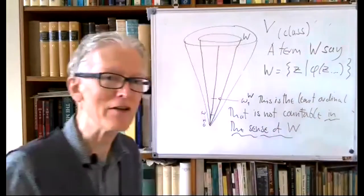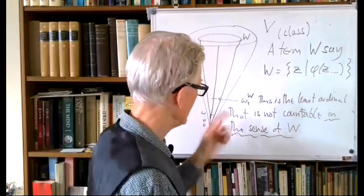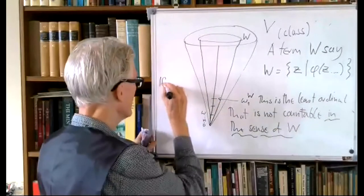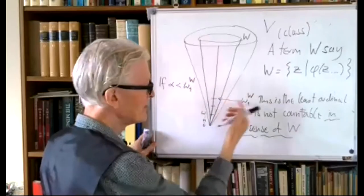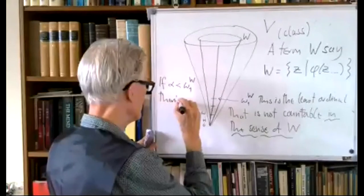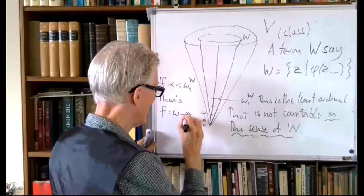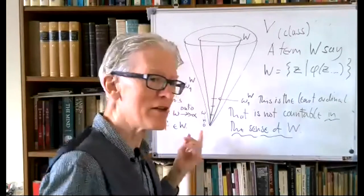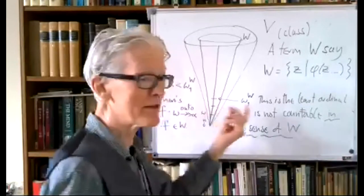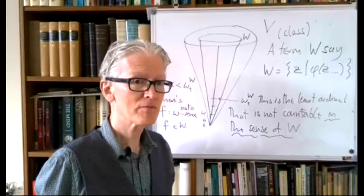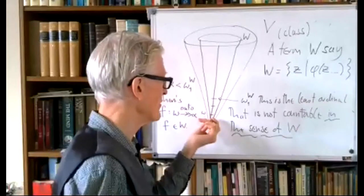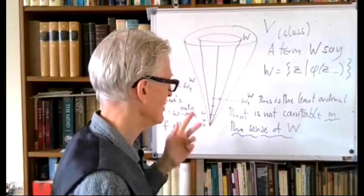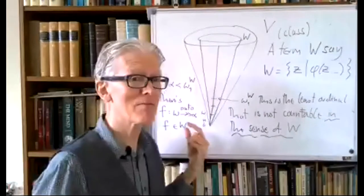The ordinals between 0 and ω₁^W are countable in W: there are functions in W from ω onto each of them. If α < ω₁^W, it is countable in W, so there is some function f from ω onto α with f in W — a function inside W witnessing the countability of α. So W has a whole bunch of functions whose domain is ω onto various ordinals, and ω₁^W is precisely the least ordinal for which no such function exists in W.